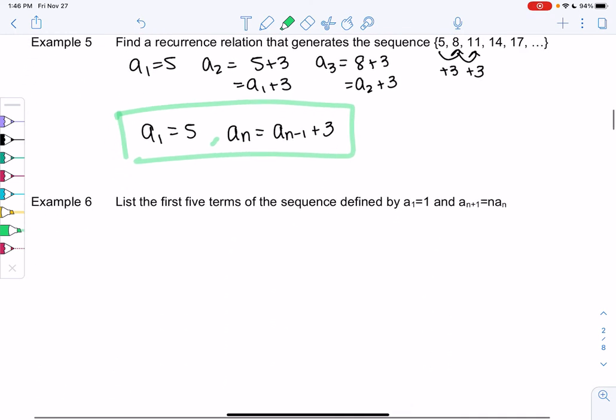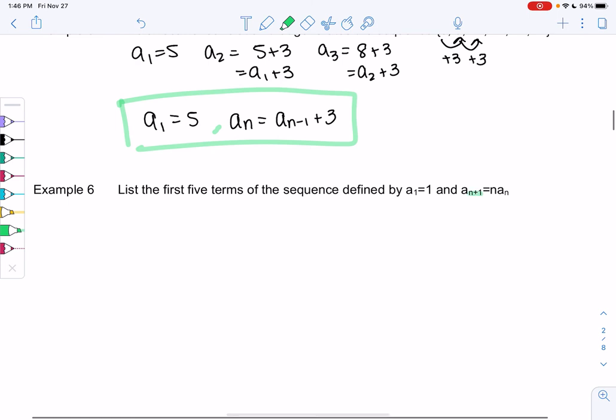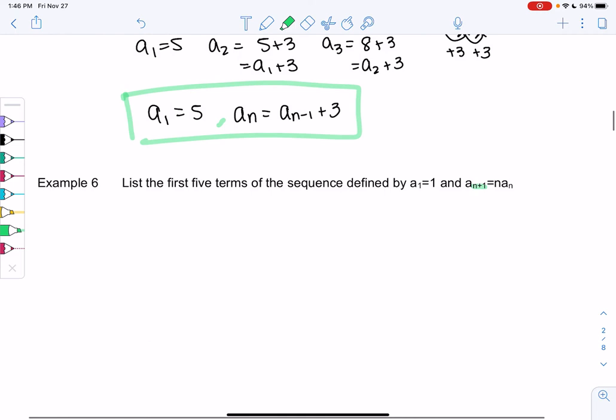Sometimes we use a_{n+1} instead, and that's fine. We're still using the previous term. The previous term for n+1 would be a_n. So let's list the first five terms where we have a sequence. a_1 is 1.